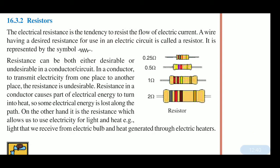The next important point is section 16.3.2 — resistors. Electrical resistance is the tendency to resist the flow of electric current. A wire having a desired resistance for use in an electric circuit is called a resistor. For example, any particular wire has some resistance.